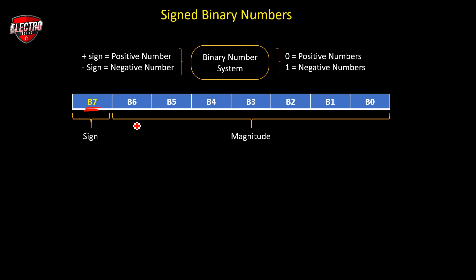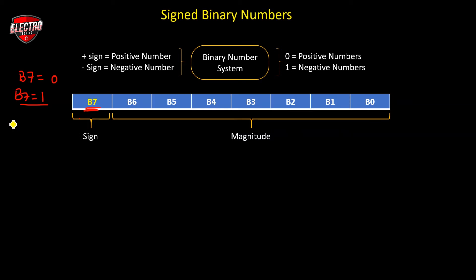In the binary number system, we have only two values: 0 and 1. If B7 is equal to 0, then the given number is a positive number. Digital devices like computers cannot directly understand positive or negative numbers, so in the group of 8 bits, the leftmost bit B7 indicates the sign, and the remaining bits from B6 to B0 indicate the magnitude of the number.